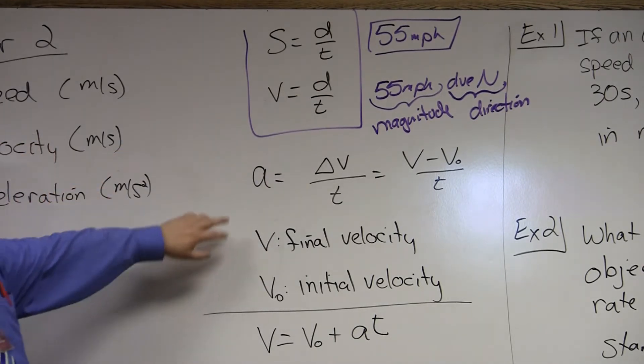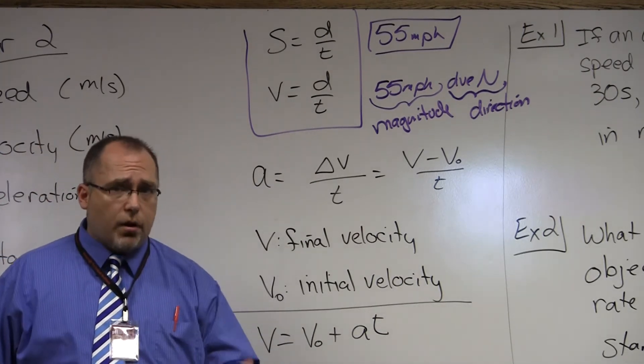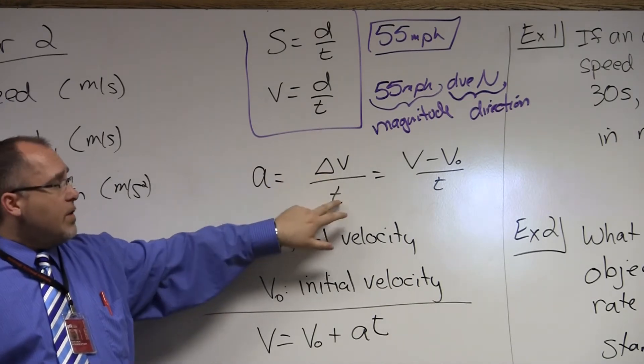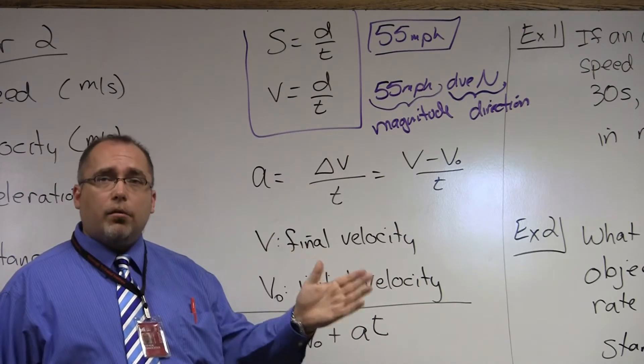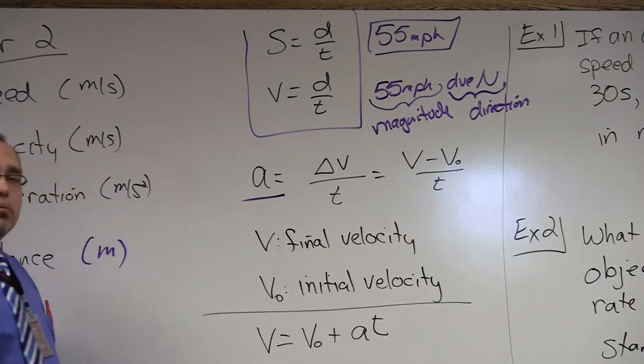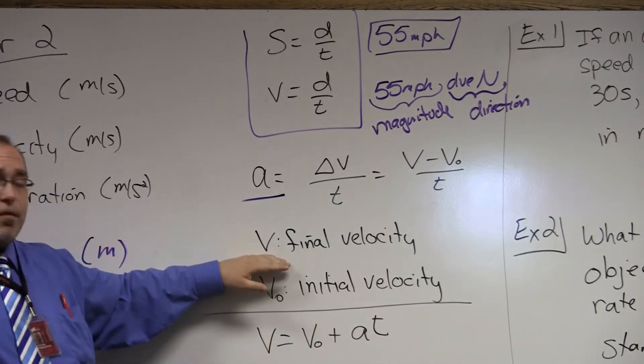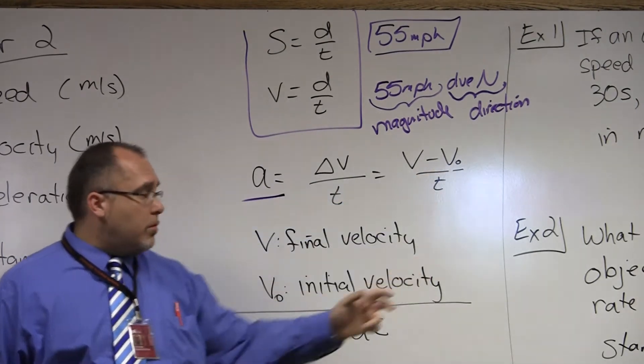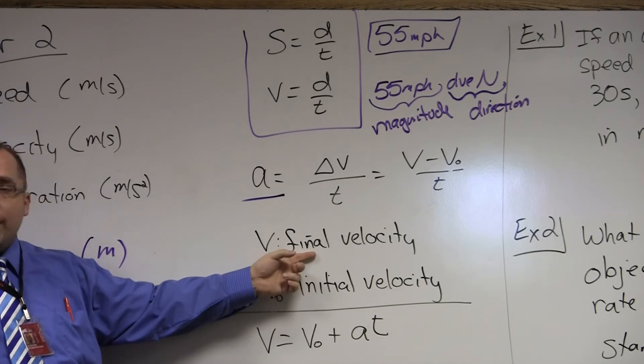But let's look at acceleration. Acceleration is defined as a change in velocity over time. So if we think back, change uses the Greek letter delta, delta v over t. More specifically, change is always your final minus initial. Whenever we have an acceleration, the lowercase v by itself is your final velocity.